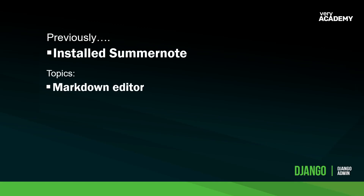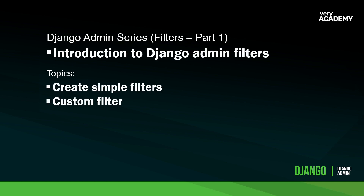Hello and welcome back to the Django admin series. Previously we installed Summernote, a markdown editor, and went through the process of installing and applying it to your application. If you want to look at that, check the previous tutorial. This tutorial has two steps: first we'll go through the basics of creating simple filters for the Django admin area, and then we'll build a simple custom filter.